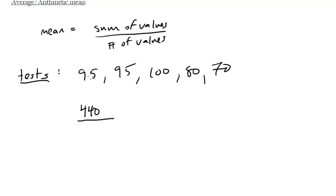Divide by the number of tests we've got, so 1, 2, 3, 4, 5—so divide it by 5. And when we do that we get the answer is 88. So my average test score would be 88.